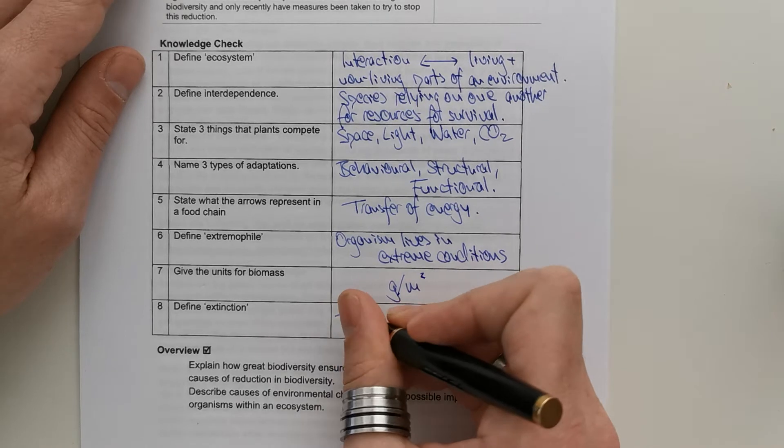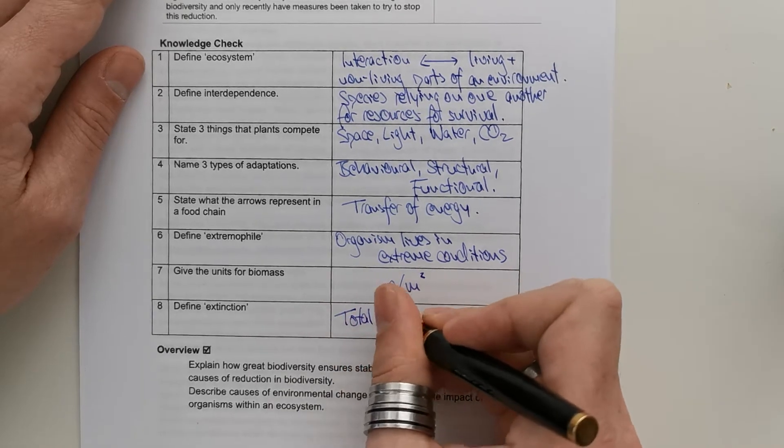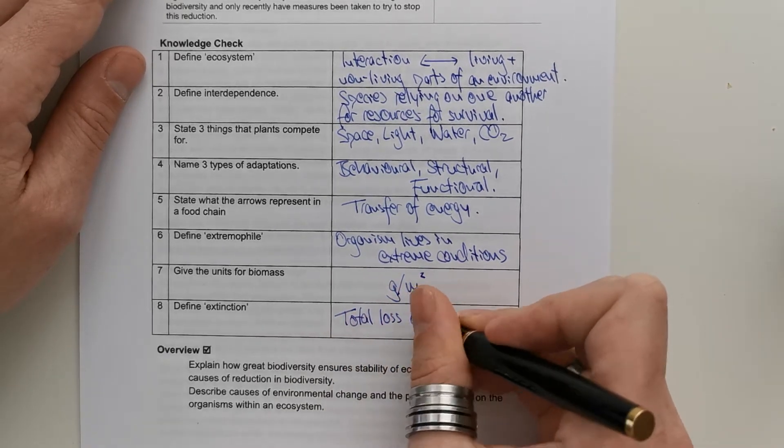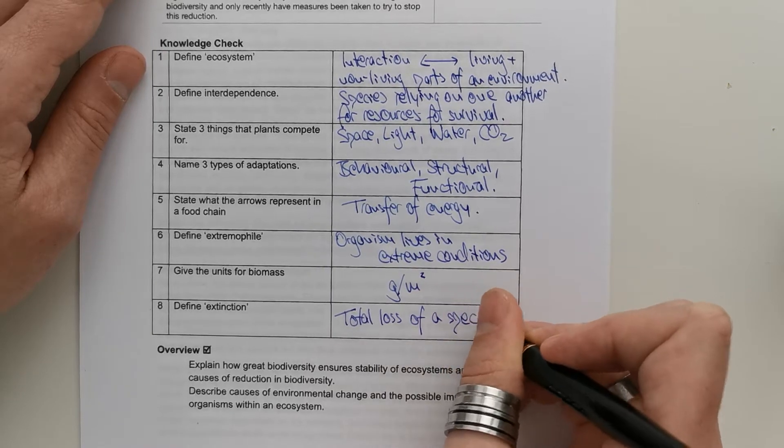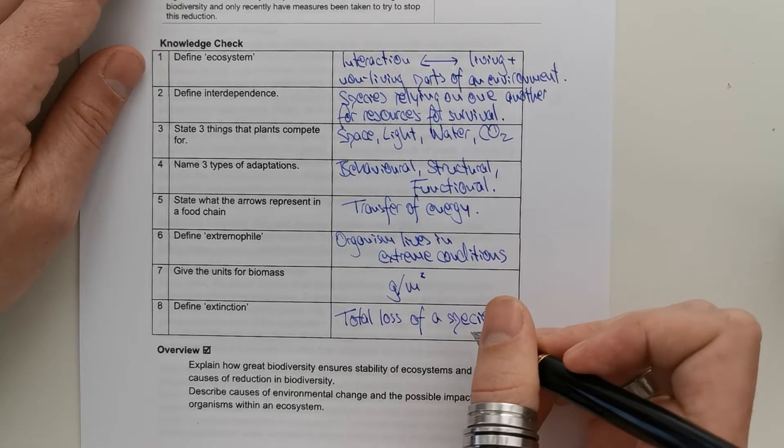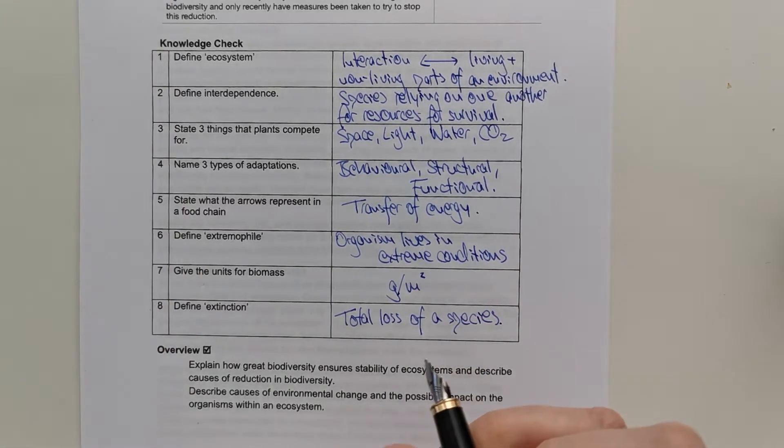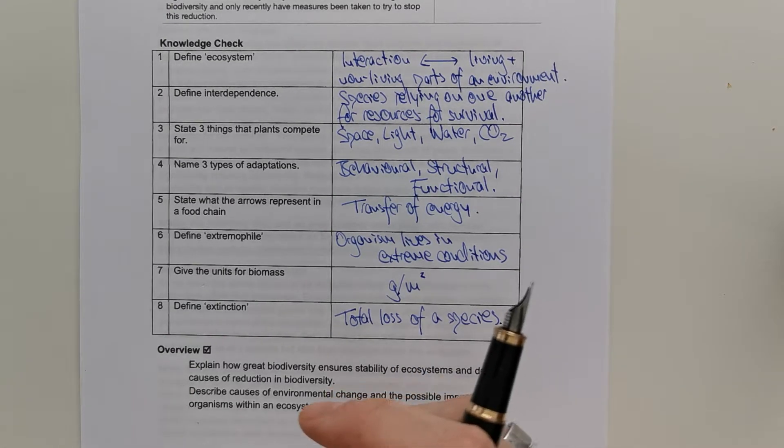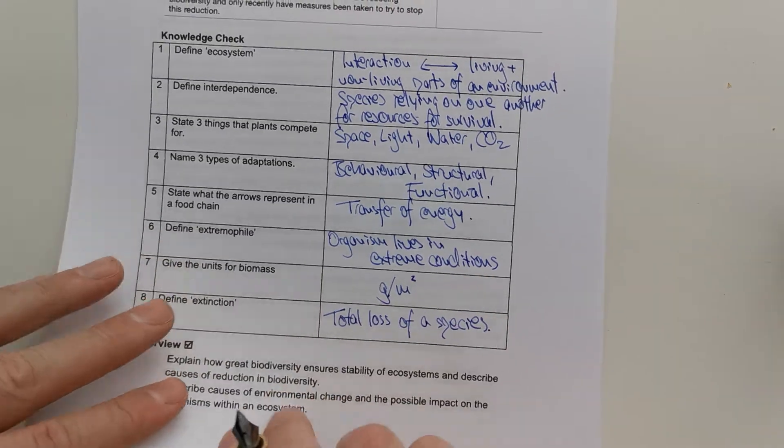What do we measure biomass in? Biomass is measured in grams per meter squared. And what do we define extinction as? We define it as the total loss of a species. Well done. Right. If you've done that, if you want to then turn over onto your next page, and we'll start to look at what we mean by the term biodiversity.